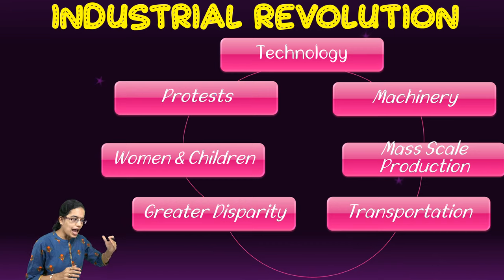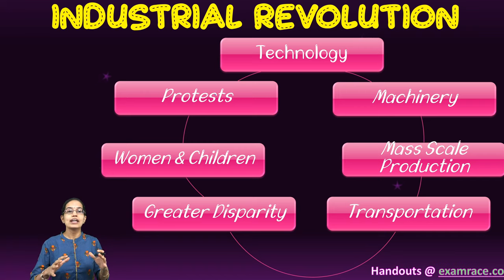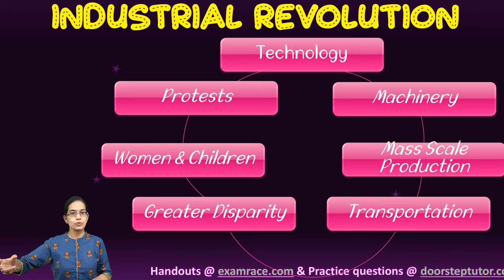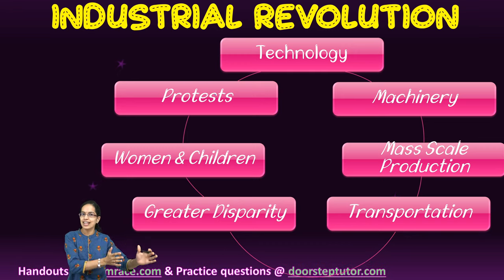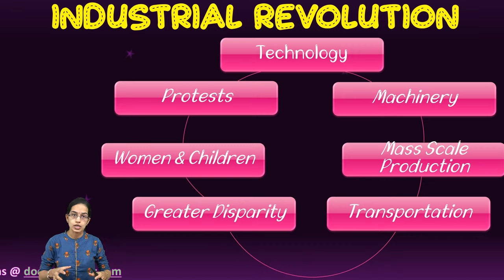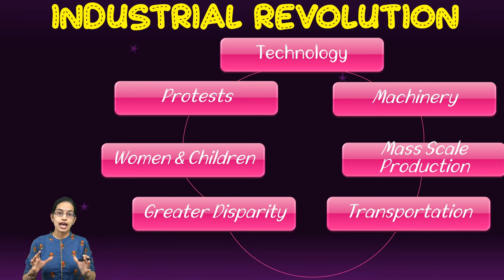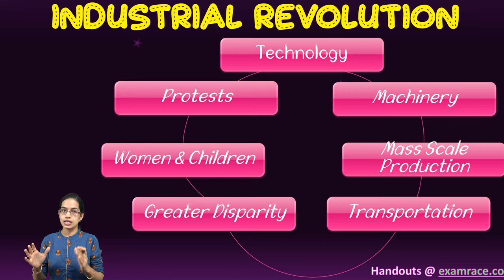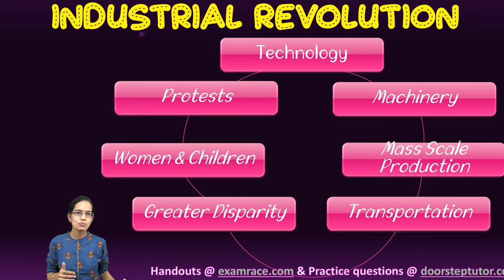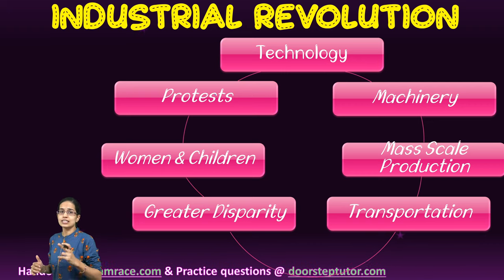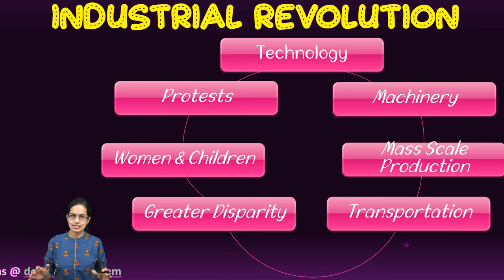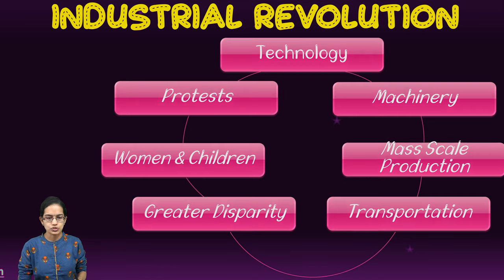As the Industrial Revolution grew, there were greater disparities in terms of rich and poor that started to originate. More women and children were engaged in work, and child labor became a major issue. When these things went beyond the capacities of common man, protests started across the region where the Industrial Revolution began.